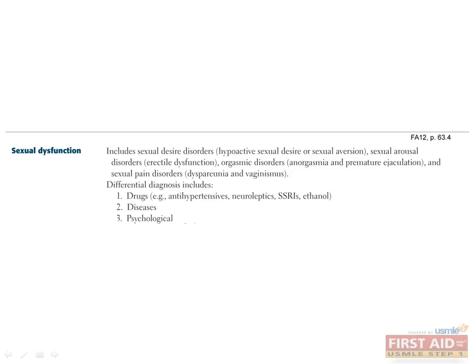What kinds of diseases can cause sexual dysfunction? Common medical conditions that can cause sexual dysfunction include diabetes, heart disease, peripheral vascular disease, and hormone imbalances. Finally, performance anxiety and other conditions like depression and anxiety can be psychological causes of sexual dysfunction.